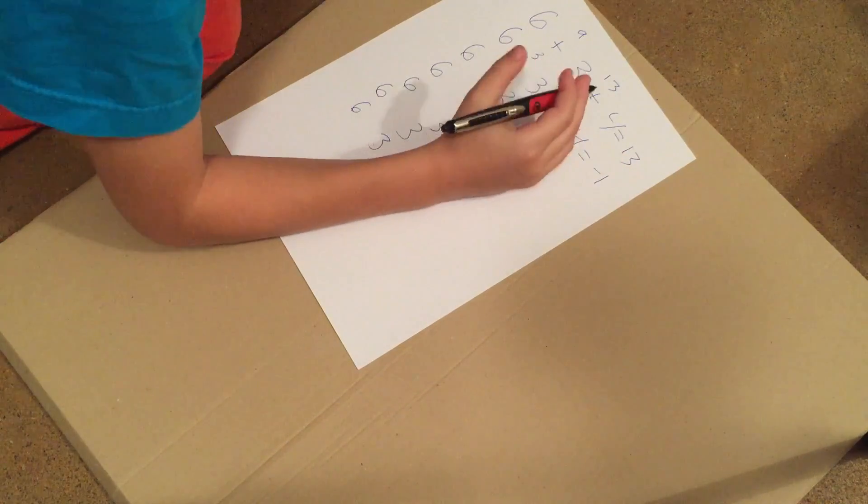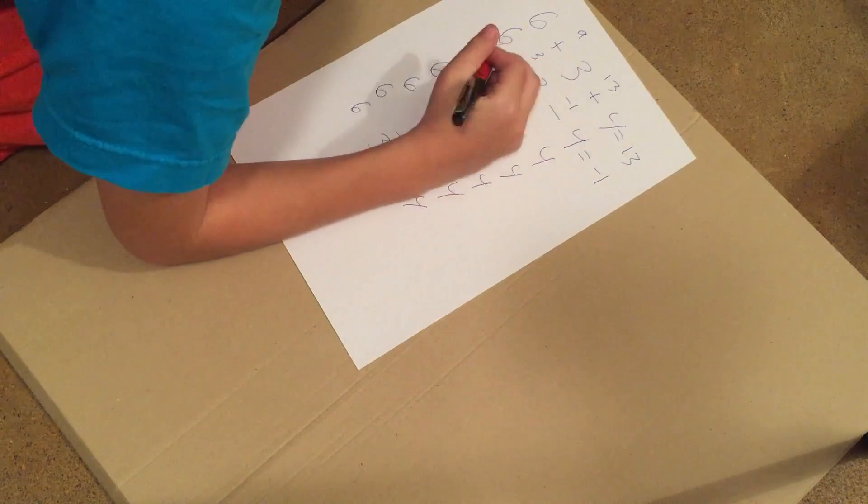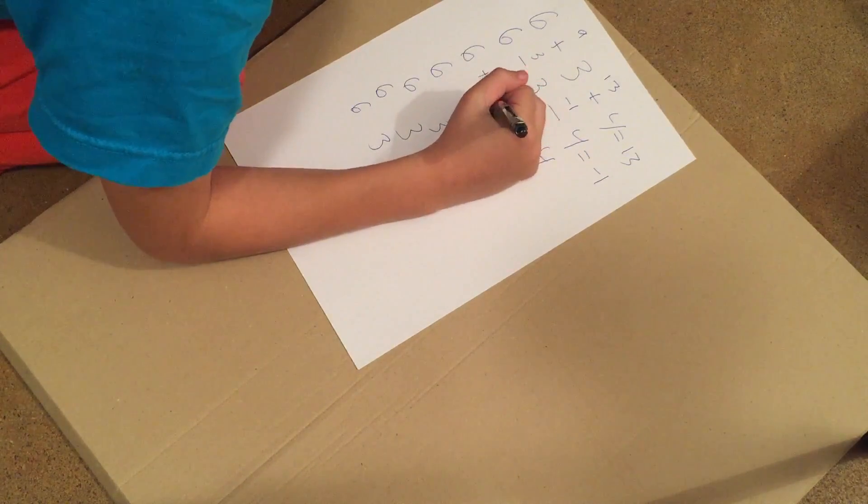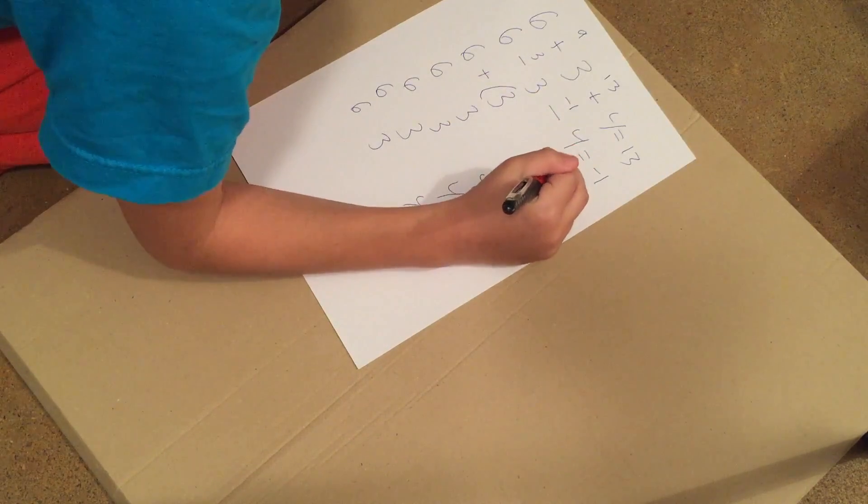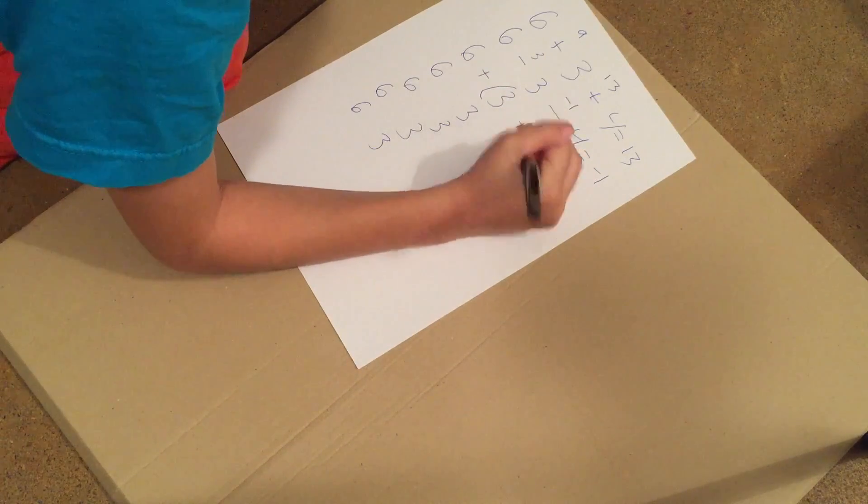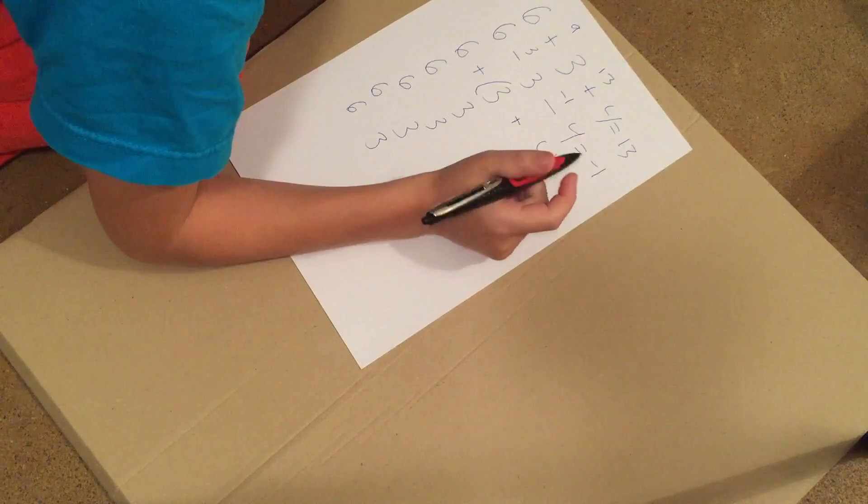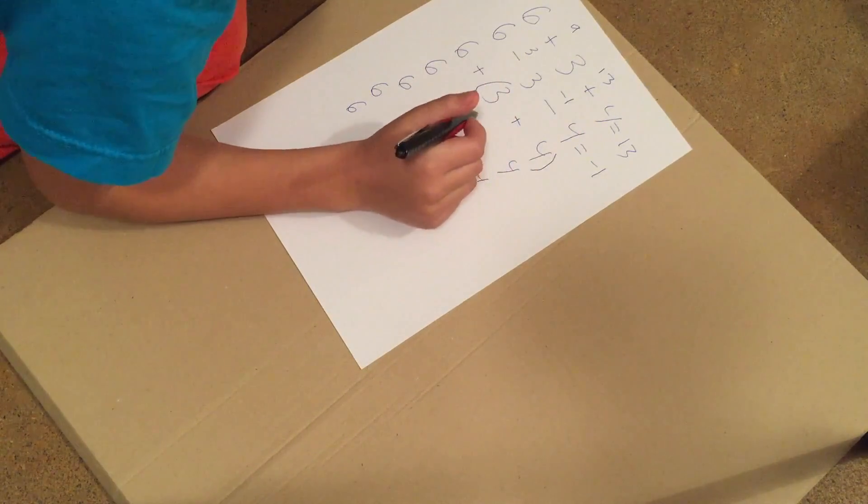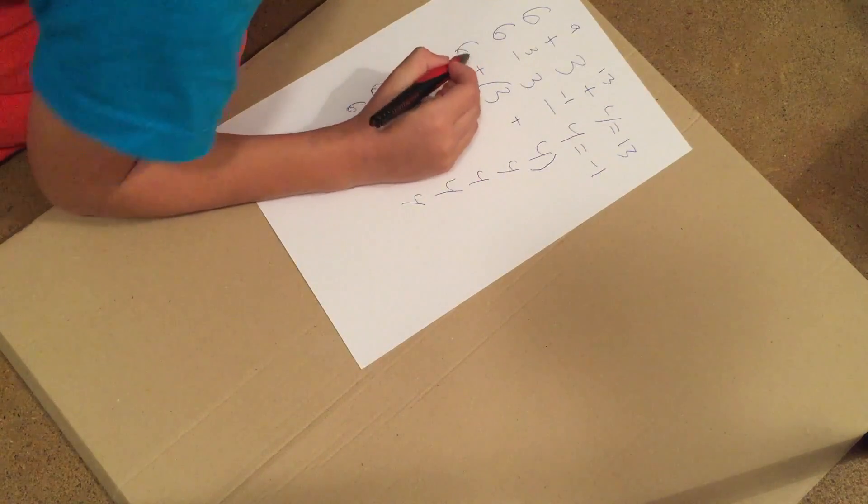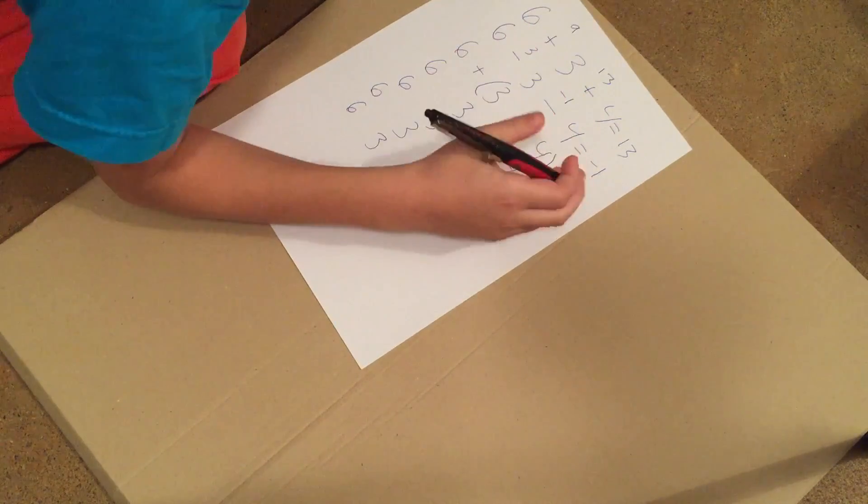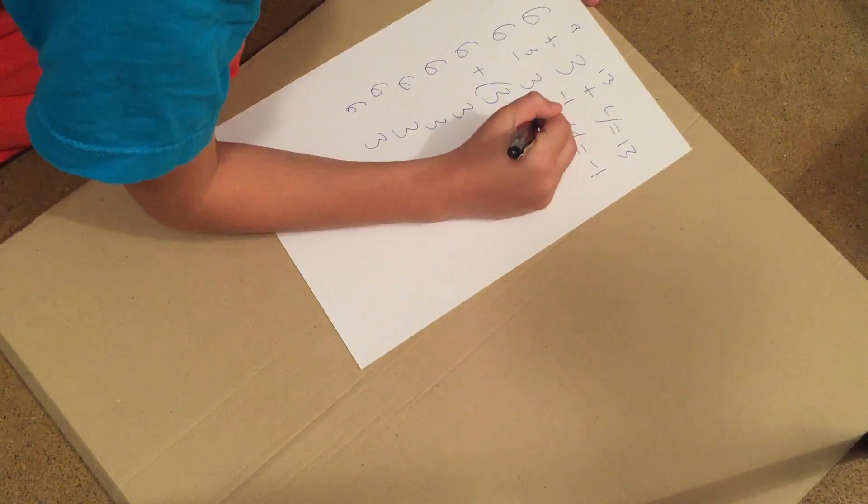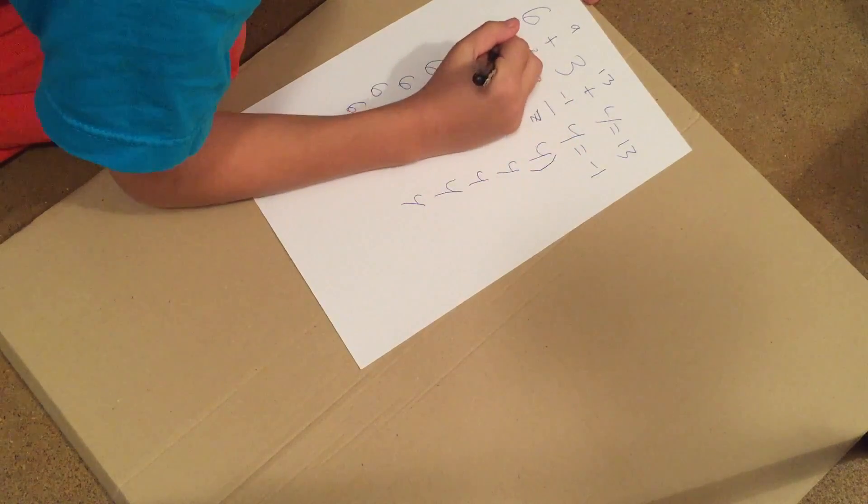Then I will do an addition with parentheses. 6 plus 3 which is 9, but I'm going to put the parentheses before the 3 and after the 4 and the plus in between it. So the parentheses means that I have to do these equations first because the parentheses are around them. Then I will add the first number which doesn't have a parentheses around them. So 3 plus 4 is 7, and 7 plus 6 is 13.